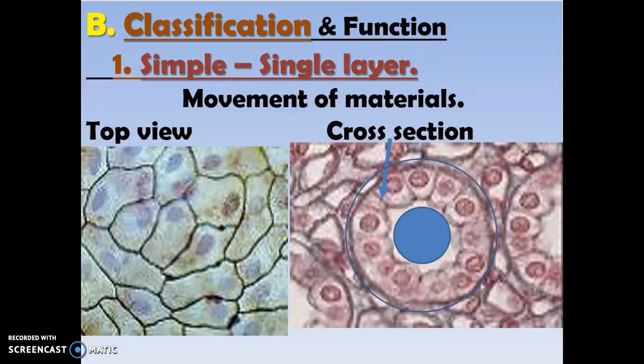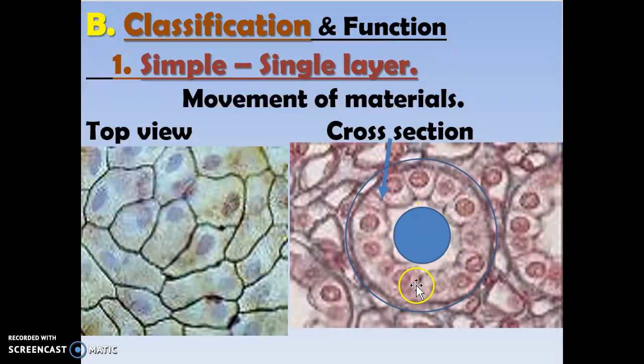Classification. Epithelial tissue is classified basically on the shape of the cells and the number of layers. Simple again means one layer. Below you have a top view of a simple squamous, and a cross section on the right side of simple cuboidal. The blue part colored in blue is the lumen, or the open spot of a duct — that might be a sweat duct or a tear duct or something.